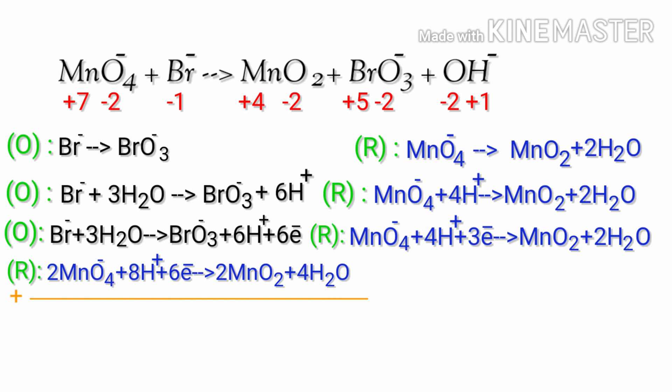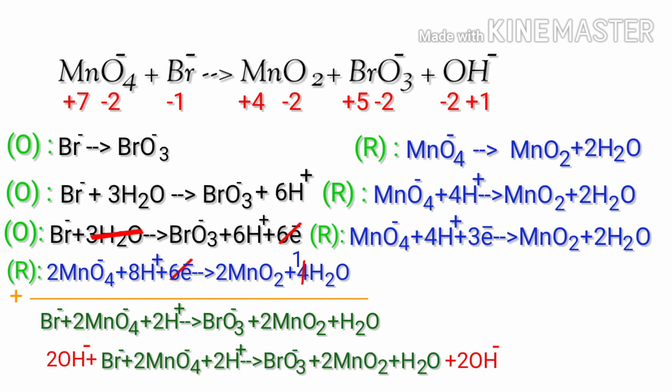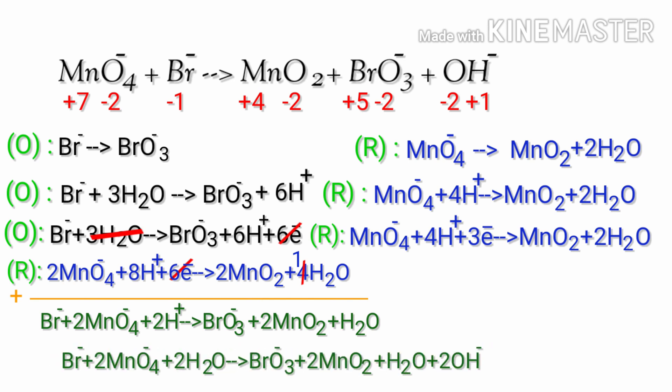Now you can cancel the same terms. For a reaction in basic medium, add one OH⁻ to each side for every H⁺ present in the equation. The OH⁻ must be added to both sides of the equation to keep charge and atoms balanced. Combine OH⁻ and H⁺ that are present on the same side to form water. Now you can cancel the same terms. The equation is now balanced.